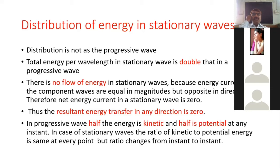Although energy per unit length in a stationary wave is double that of a progressive wave, there is no net flow of energy in a stationary wave. The incident wave carries energy current in one direction and the reflected wave carries an equal energy current in the opposite direction, so they cancel. Therefore the net energy transfer in any direction in a stationary wave is zero.